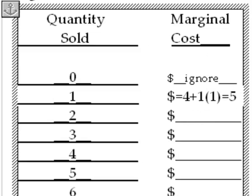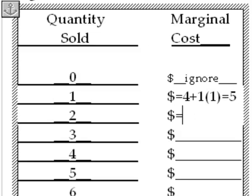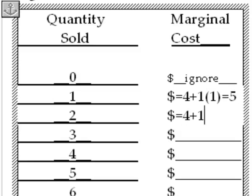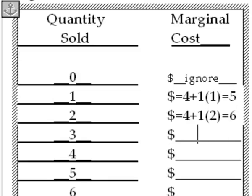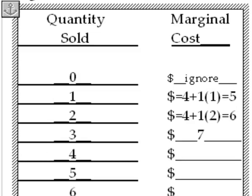And now we go down to quantity 2 and it's the same thing except we're saying 4 plus 1 times 2 equals 6. And so the cost of producing the second unit is $6. And if you notice each time you go down the marginal cost increases by 1.